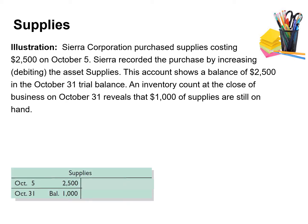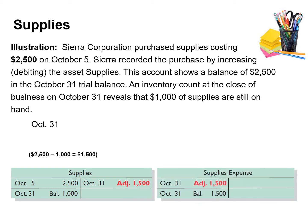In October, Sierra purchased supplies costing $2,500. A physical count of the inventory at the close of business on October 31st reveals that $1,000 worth of supplies are still on hand. So the cost of the supplies used is $1,500, which is simply the difference between $2,500 and $1,000. This use of supplies decreases the asset account supplies. The other half of that transaction is to increase an expense account, supplies expense. After the adjustment, the asset account supplies shows a balance of $1,000, equal to the cost of supplies on hand.